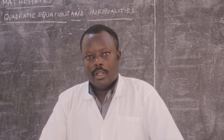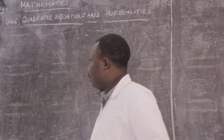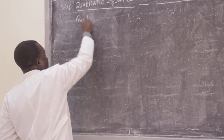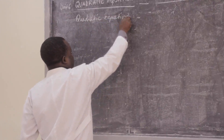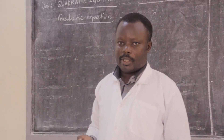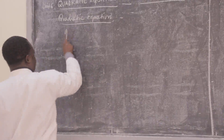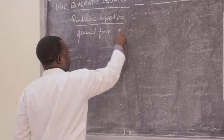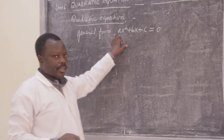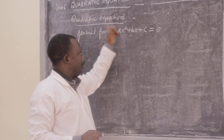The lesson for today is Quadratic Equations and Inequalities. A quadratic equation is an equation of the form ax² + bx + c = 0. This is the general form. Any equation of the form ax² + bx + c = 0 is a quadratic equation.